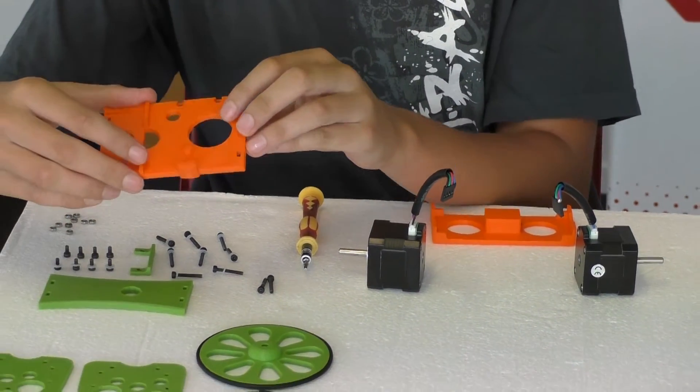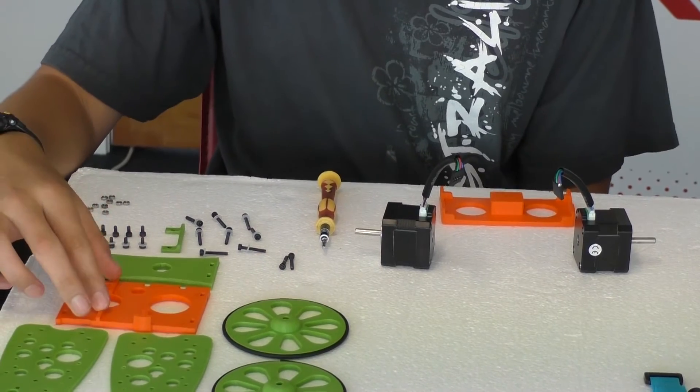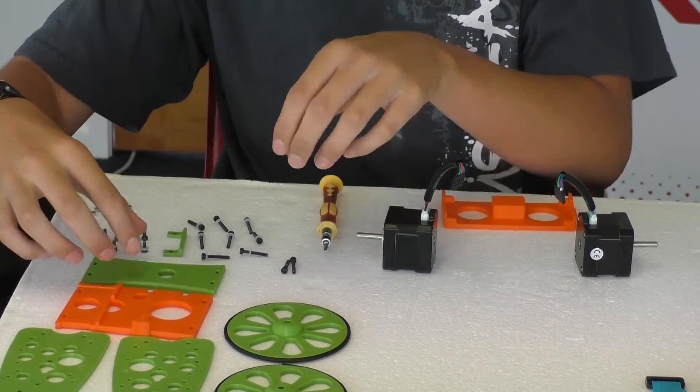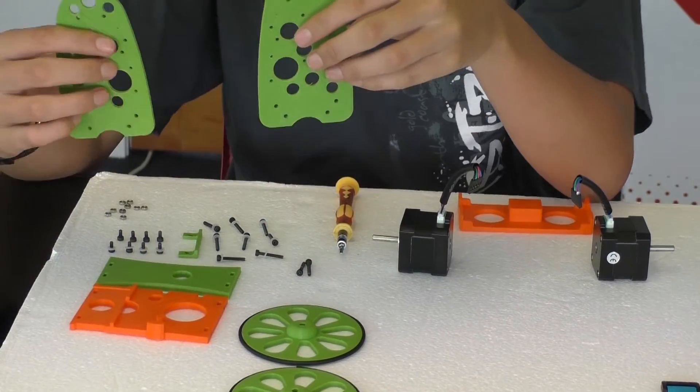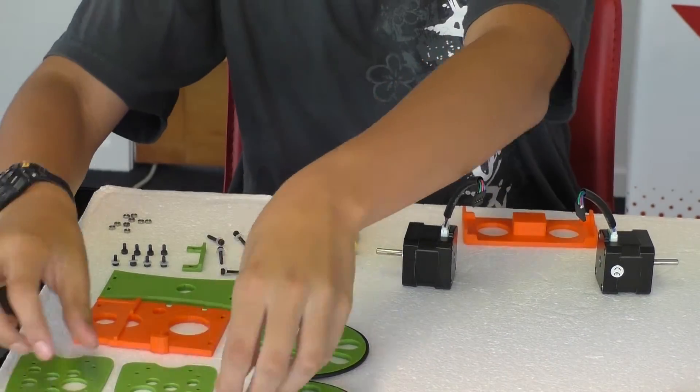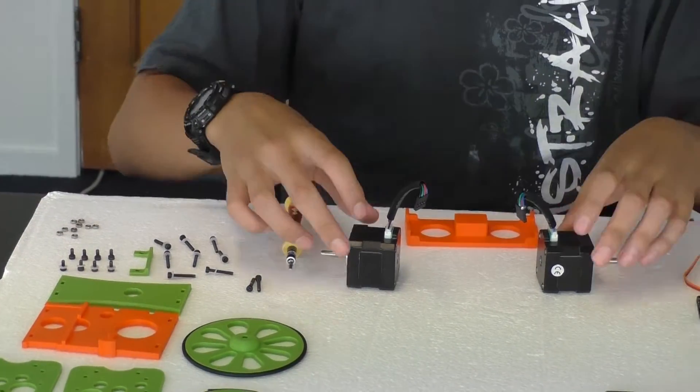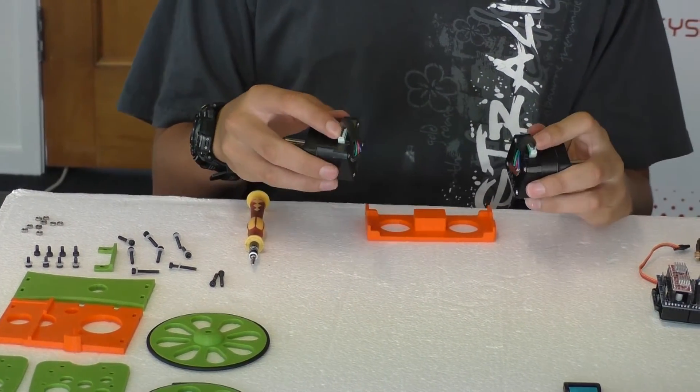This is where the computers go, the Arduino goes, and the brain. The top floor is where the switch goes. These are the two side panels to hold it all together. These are the wheels. And now, we need to put on the motors.